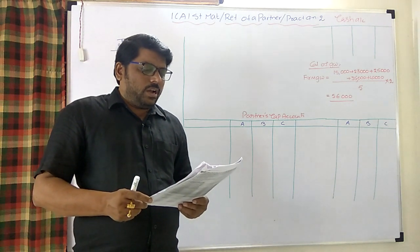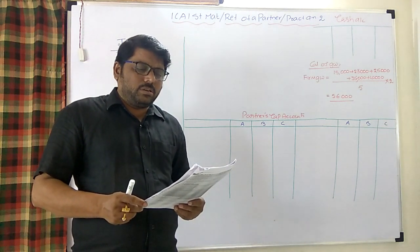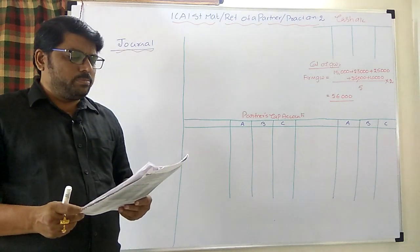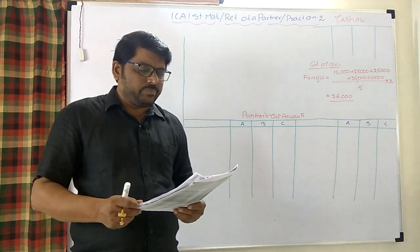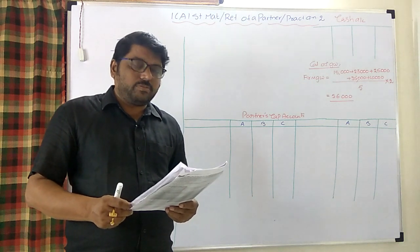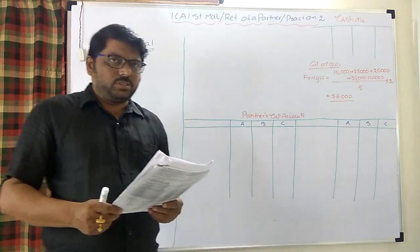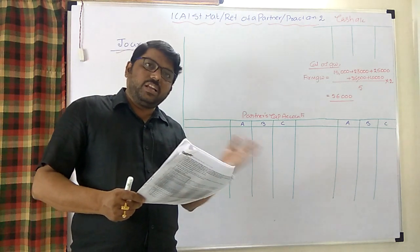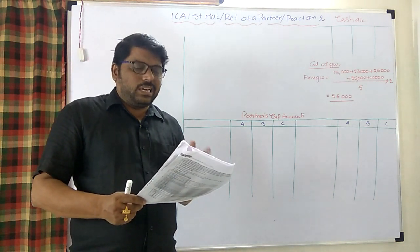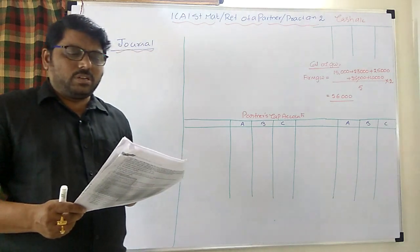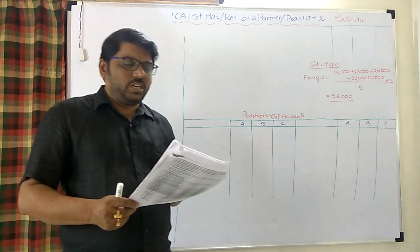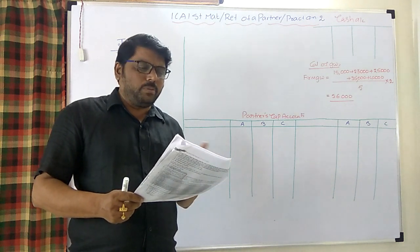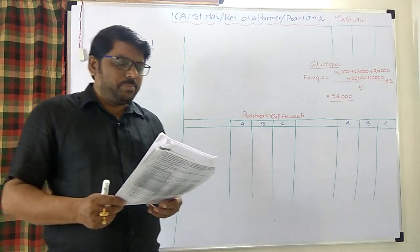The profit sharing ratio was revised to 2:3:1 and implemented from 1st April 2015, meaning the revised ratio applies since the beginning of the year. Therefore, the revised profit of 36,000 should be shared in the new ratio 2:3:1 for the entire year for A, B, and C.